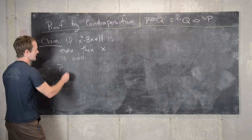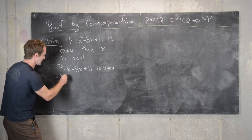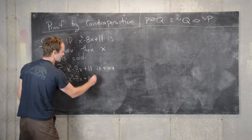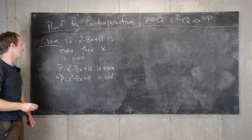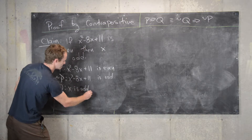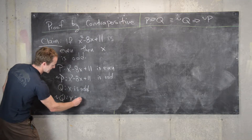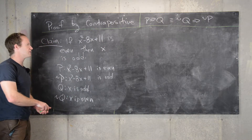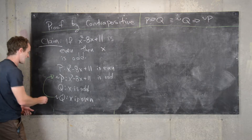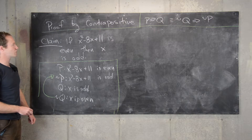The statement p is: x squared minus 8x plus 11 is even. Not p — since not being even is the same as being odd — is: x squared minus 8x plus 11 is odd. And q is: x is odd. Since not being odd is equivalent to being even, not q is: x is even. So to prove this using the contrapositive, we need to assume not q and use that to prove not p.